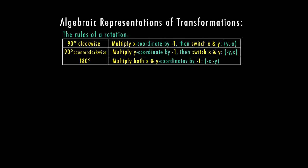Now let's look at the rules for rotations, which we covered more in the rotation video linked below. For 90 degrees clockwise, multiply the x coordinate by negative 1 and switch x and y. Note that 270 degrees clockwise equals 90 degrees counterclockwise — so for 90 degrees counterclockwise, multiply the y coordinate by negative 1, then switch x and y. For 180 degrees, multiply both x and y by negative 1, but they don't switch places.